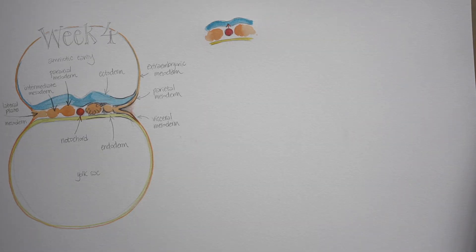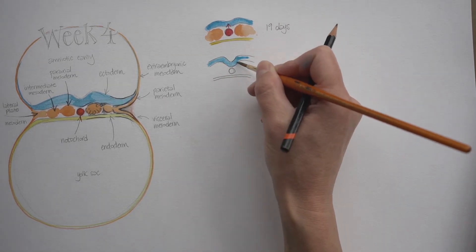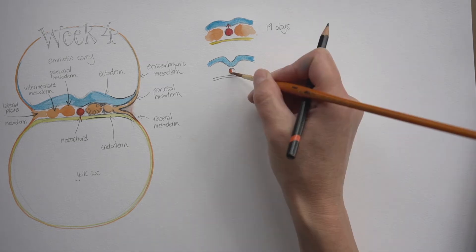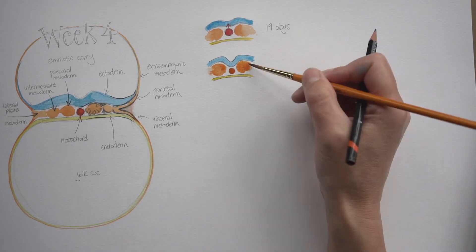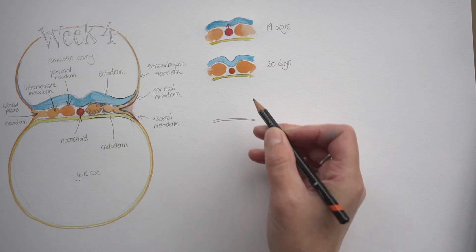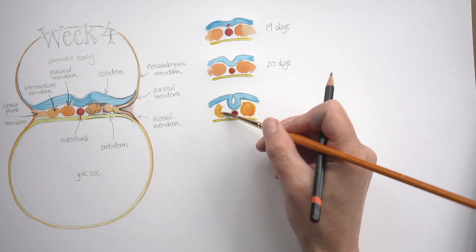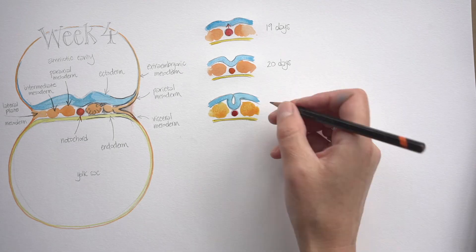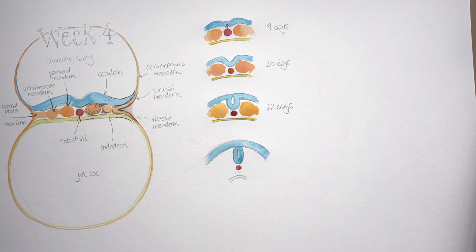Moving along, we can see the ectoderm is starting to fold down so a groove is forming in the ectoderm - that's at 20 days. And then a day or so later we can see that that groove is deepened, and the ectoderm is starting to form a kind of tube beneath the surface at 22 days.